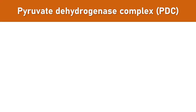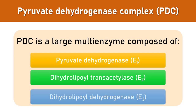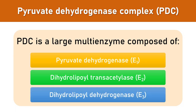Pyruvate is converted to acetyl-CoA by the pyruvate dehydrogenase complex, which is a multi-enzyme complex consisting of three different enzymes. Strictly speaking, the pyruvate dehydrogenase complex is not part of the TCA cycle, but it is a major source of acetyl-CoA. These three enzymes are pyruvate dehydrogenase, dihydrolipoyl transacetylase, and dihydrolipoyl dehydrogenase.